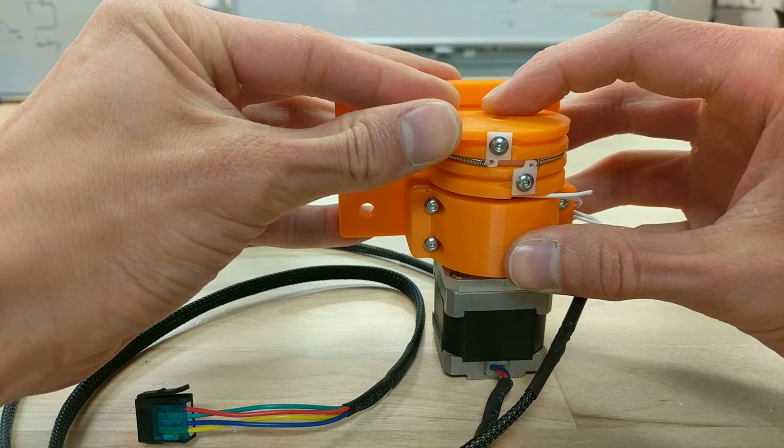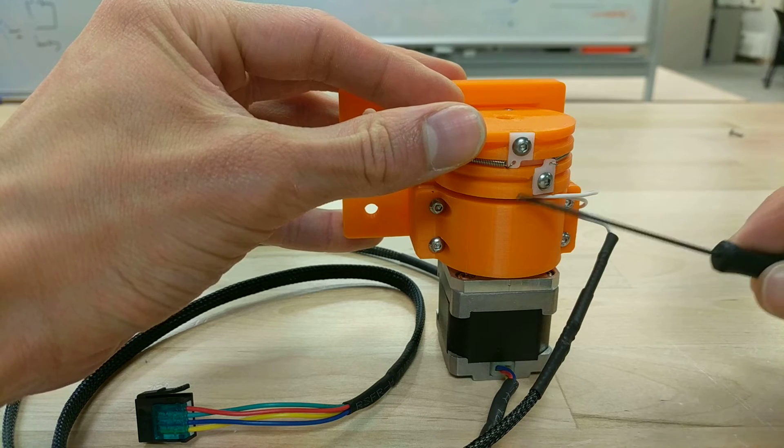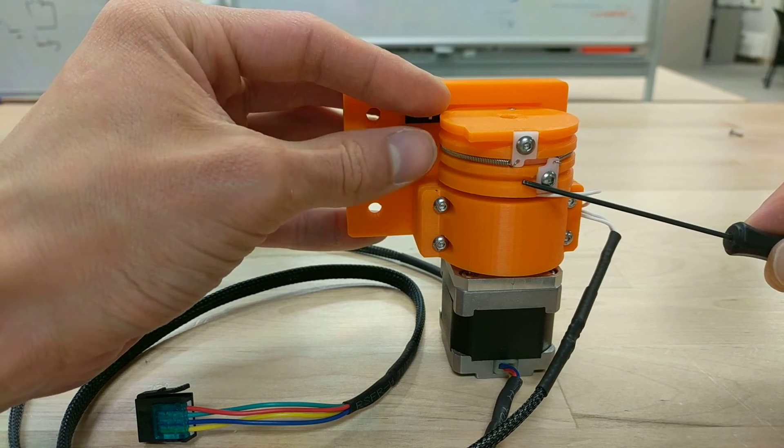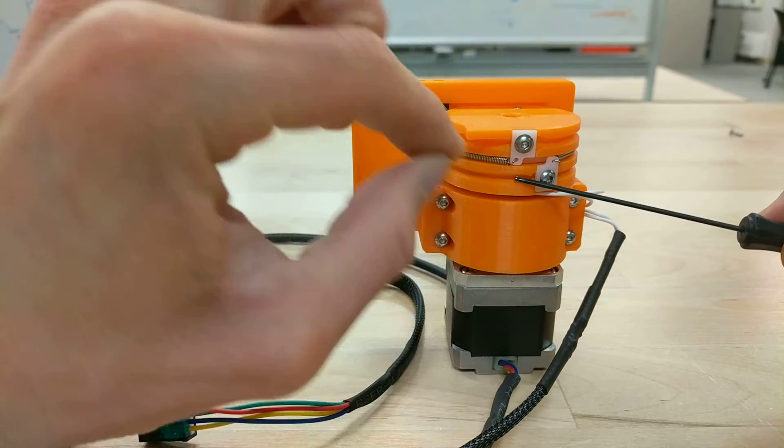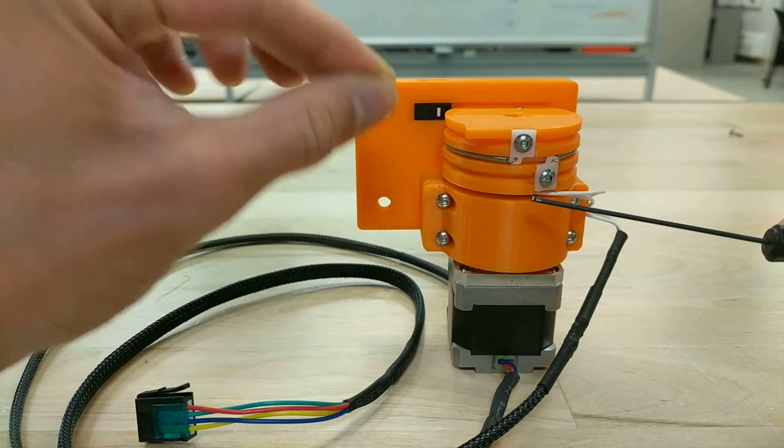So the way this works is as I rotate in this direction, eventually at some point the cable that's attached to the bottom pulley is actually going to lock. That's from the tool side. The reason that's happening is because the tool is now stuck.